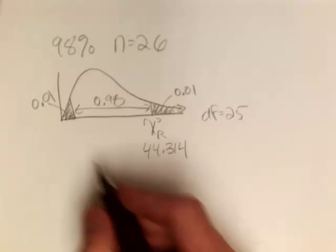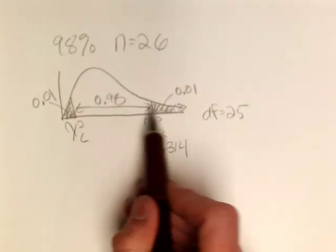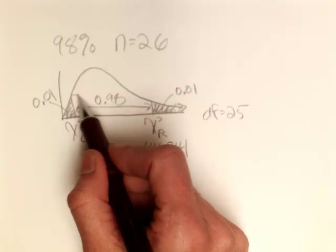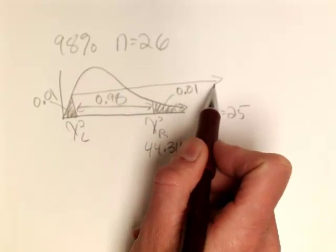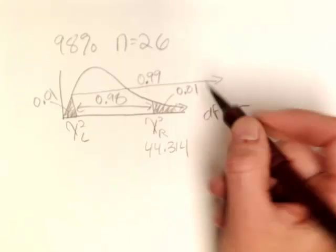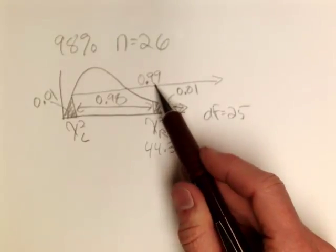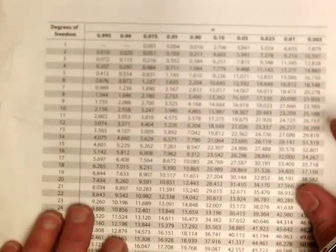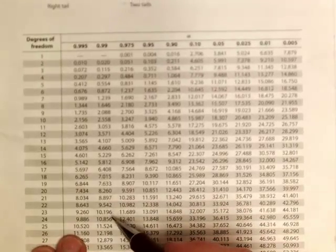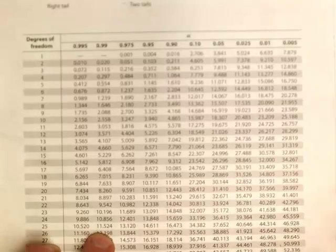For the lower critical value, I'm reading in the same direction. It's going to be .98 plus .01, so I need to use the column corresponding to .99 for 25 degrees of freedom. With 25 degrees of freedom and .99 area to the right, I get 11.524.